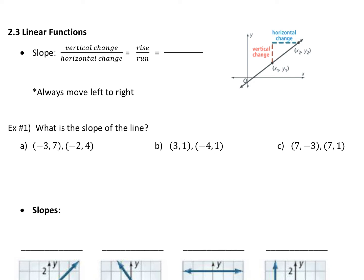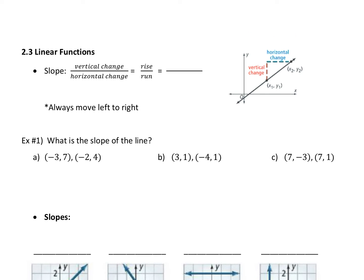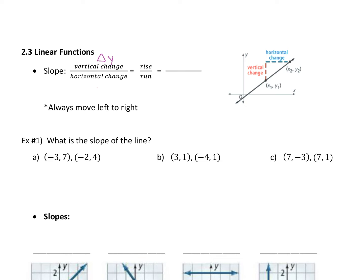Rise over run. You've maybe seen it as a fraction before. Sometimes people say delta y over delta x — that means the change in y over the change in x. The way we typically write the slope formula, does anyone remember it if we're using x's and y's? I promise you've seen it before. Slope formula: y2 minus y1 over x2 minus x1.